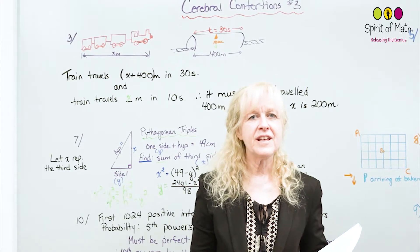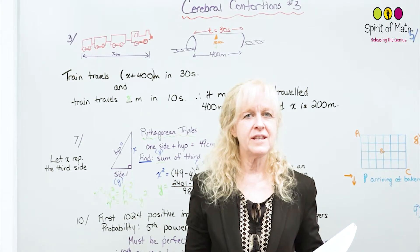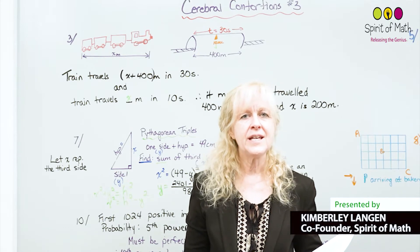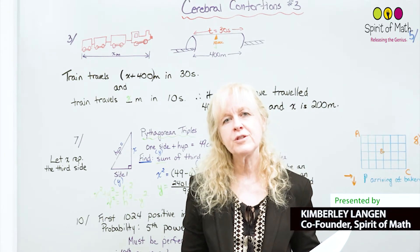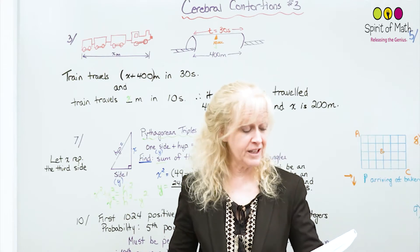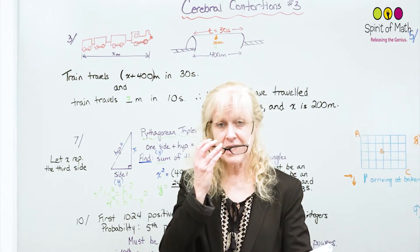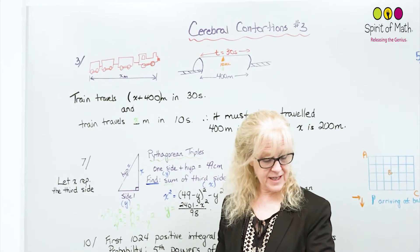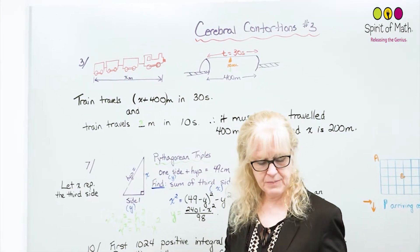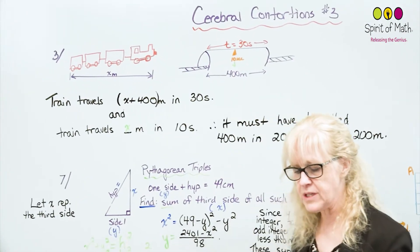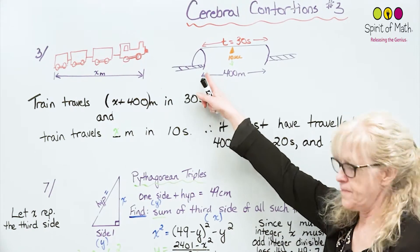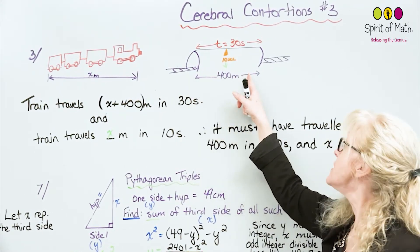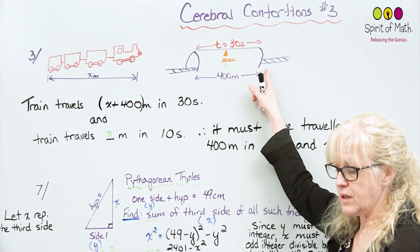Cerebral Contortions number three. Let's look at the test bank solutions and I'll try to explain them further so if you had some difficulties you'll understand them better. Let's look at question number three first. It says a train x meters long takes 30 seconds from the time it first enters a tunnel that is 400 meters long until it is completely through the tunnel.